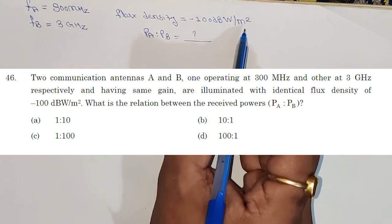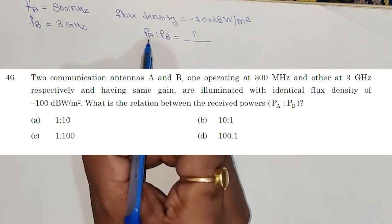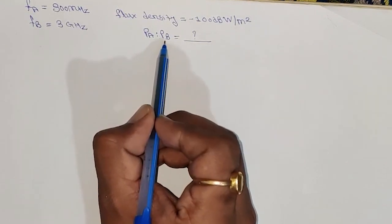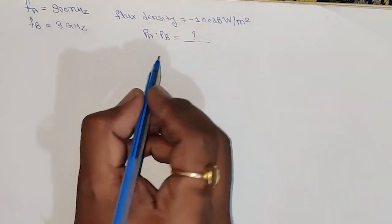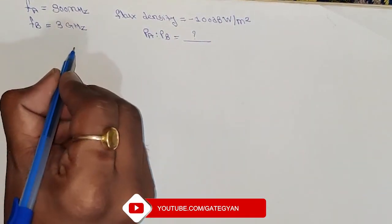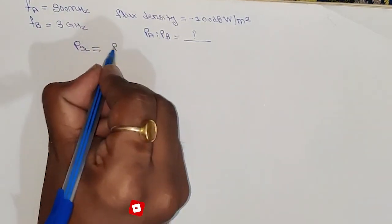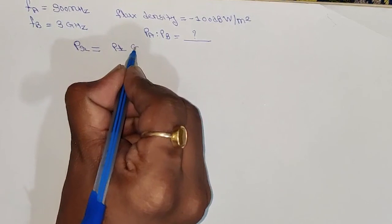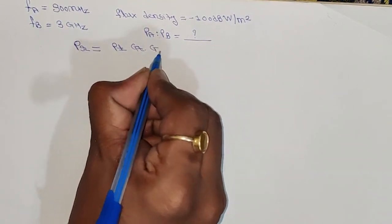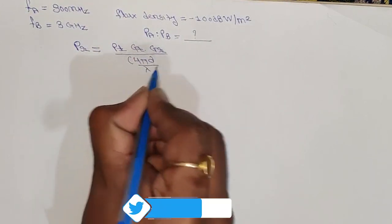We have to find the relation between the received power Pa and Pb. First of all, we need to know what is the received power. So we can write the received power is equal to Pt times Gt times Gr divided by 4 pi d upon lambda whole square.